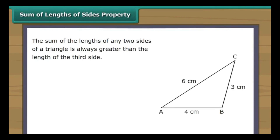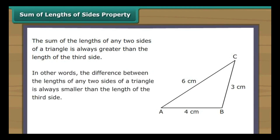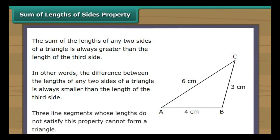The sum of the lengths of any two sides of a triangle is always greater than the length of the third side. In other words, the difference between the lengths of any two sides is always smaller than the length of the third side. Three line segments whose lengths do not satisfy this property cannot form a triangle.